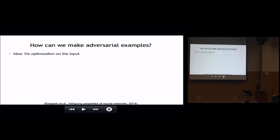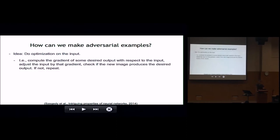So how do we actually make these? The original idea for generating adversarial examples was to do optimization directly on the input with respect to the model. We compute the gradient of some desired output class with respect to that input, then adjust the pixels of the image by that gradient, and see if that new image produces the desired output. If we do that long enough with a proper optimizer, we're guaranteed to end up with an image classified into the desired output. And it turns out you don't have to change the image very much in order to get a confident prediction of the desired target.